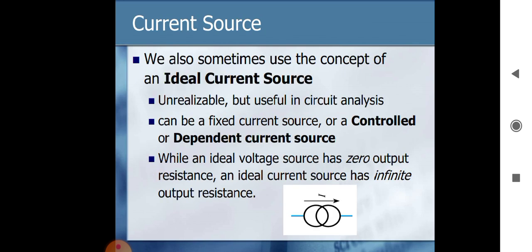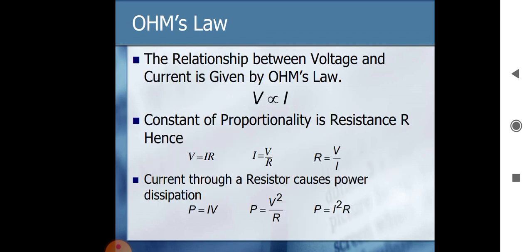Like voltage source, there is also a type of current source — that is the ideal current source. On screen you can see the symbol of the current source. For an ideal current source, resistance is infinite, or we can say resistance is zero. Whenever we talk about voltage and current relations, it is defined with the help of Ohm's Law: V is directly proportional to I, or V = IR. For I the equation is V/R, and for R it is V/I. Current through a resistor causes power dissipation.